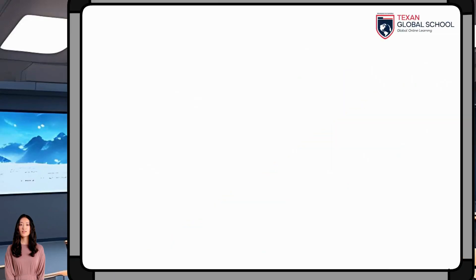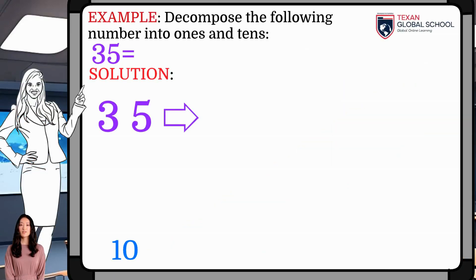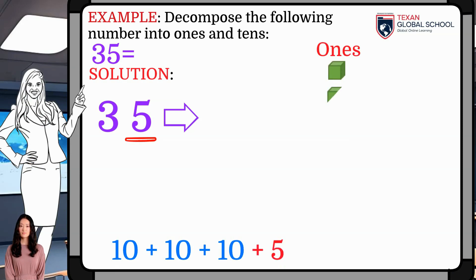In this other example, decompose 35 into 1s and 10s since it has 2 digits. So, 35 has 5 1s and 3 10s.